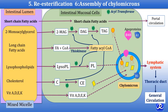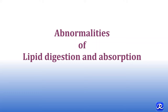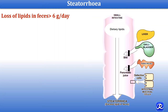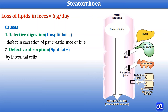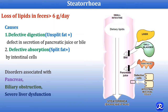Steatorrhea is the condition of loss of lipids in feces of more than 6 grams per day. The causes of steatorrhea include defective digestion: if there is a defect in the secretion of pancreatic juice or bile, there is defective digestion and the fat excreted in feces is unsplit fat. In case of defective absorption by the intestinal cell, the fat present in feces is split fat. Steatorrhea occurs in disorders associated with the pancreas, biliary obstruction, and severe liver dysfunction.